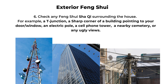The next point is about sha qi, or negative energy. For example, you don't want your house to face a cemetery. Even a temple or church is not ideal, because it has more yin energy. Another famous one is the T-junction — if there's a long straight road pointing to your door, it can create negative energy. Or if you are very close to a crossing road, it's also not ideal. The road can be like a scissor shape, and that creates sharp energy and can cause health issues.